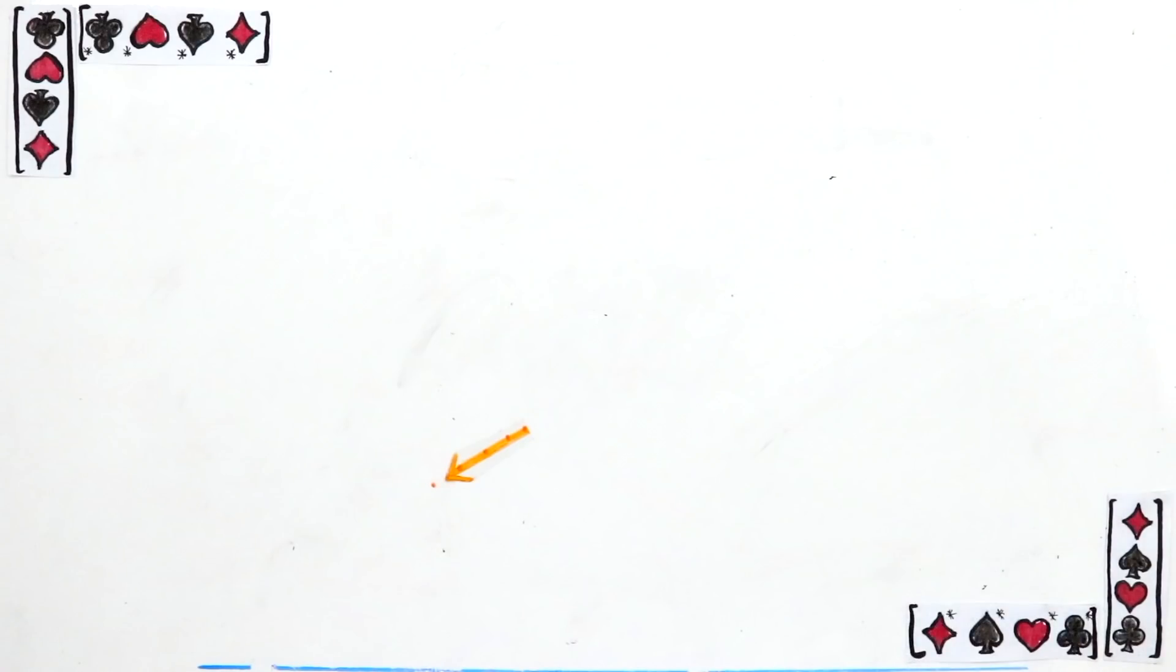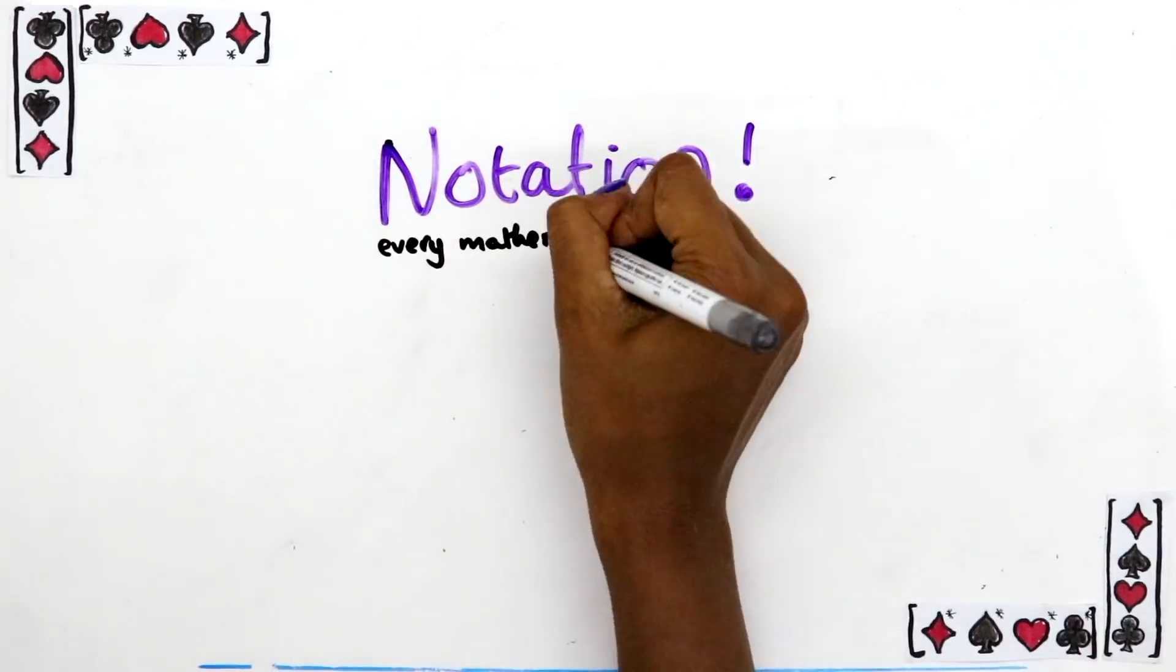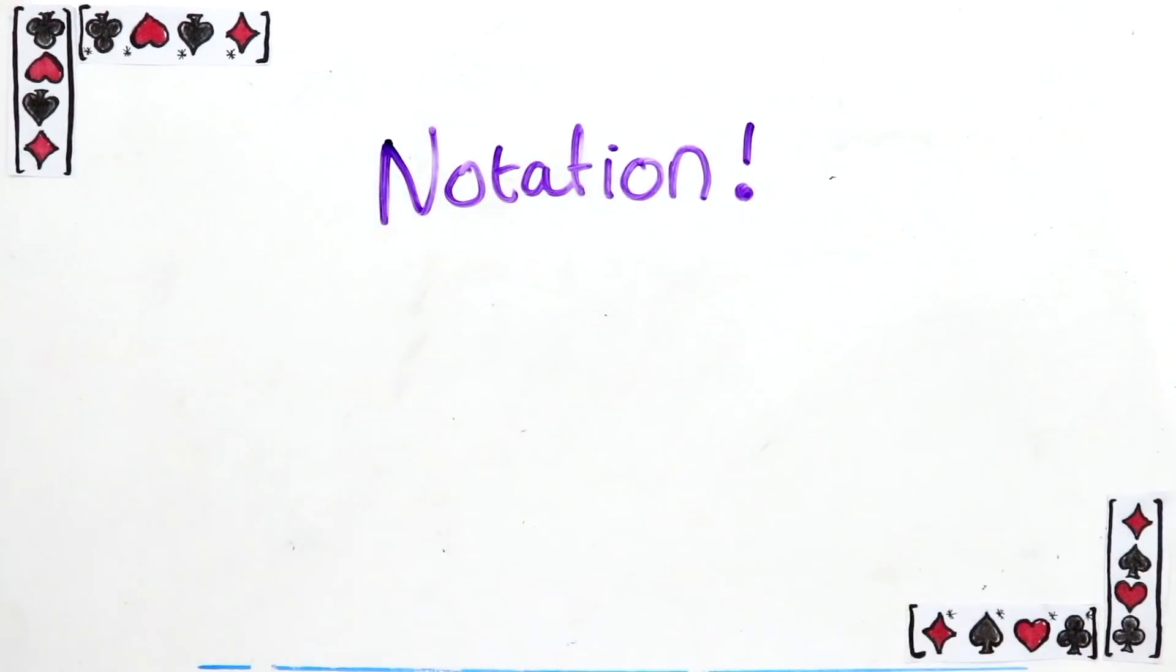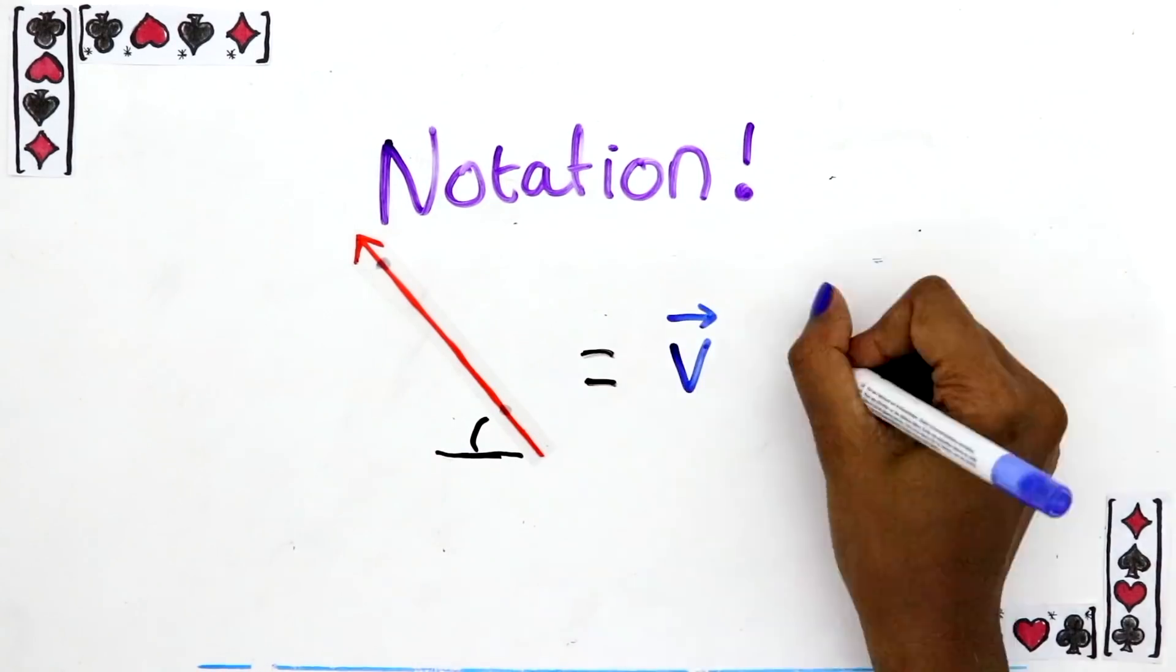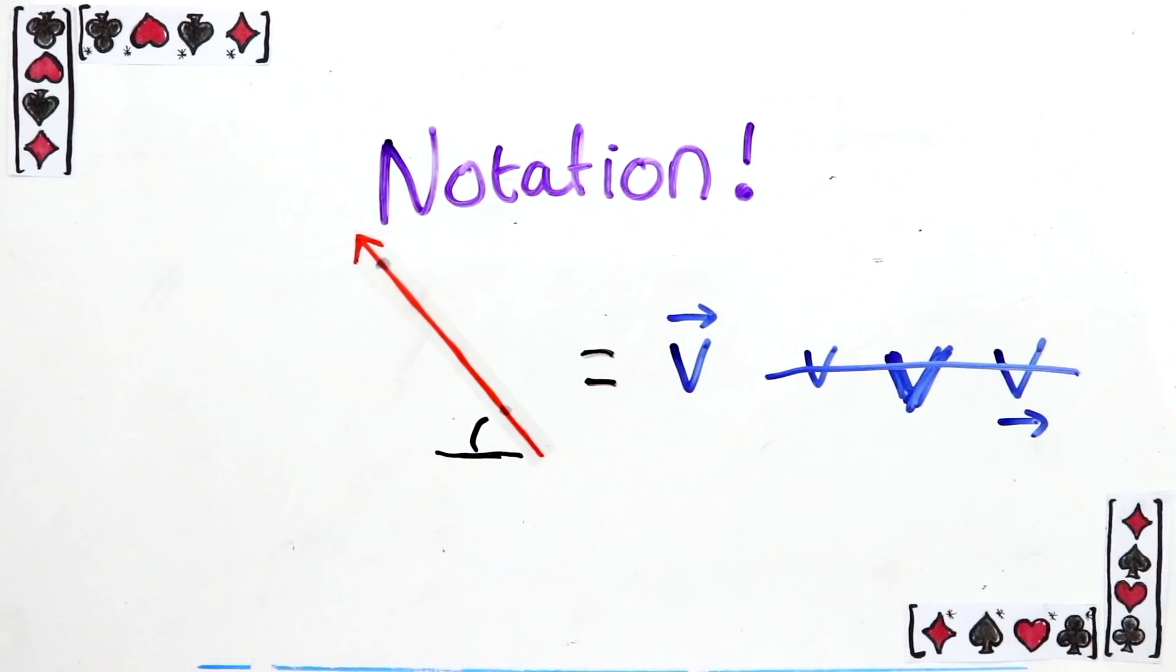Before we move on to the really interesting stuff, a quick word about notation. I'll write a general vector like this, with a little arrow on top. This is a fairly common notation, but there's lots of different ways people use. In fact, in quantum mechanics we use a notation that you've already seen if you watch my videos, and it's like this.